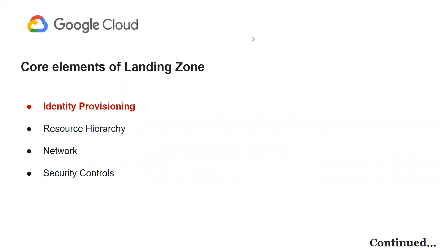The first core element is identity provisioning. This is the process of creating and managing user identities and access to resources on the cloud. Having a well-defined identity provisioning system in place ensures secure access to resources.